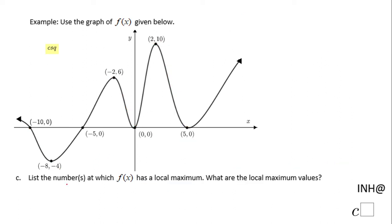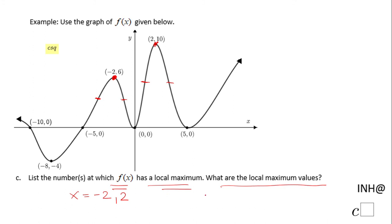Part c says: list the numbers at which f of x has a local maximum. A local maximum is when the function goes from increasing to decreasing. One local maximum is at x equals negative 2, where the function increases then decreases — the value there is y equals 6. There is one more at x equals 2, where the local maximum value is y equals 10.